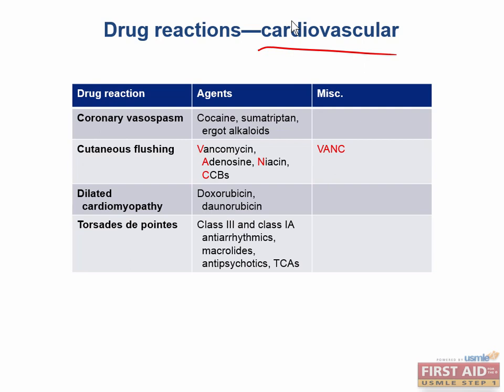We're going to start off with the cardiovascular drugs and their important side reactions. Drugs that cause coronary vasospasm include cocaine, sumatriptan, and ergot alkaloids. Remember that cocaine users may present to an ER with angina, because a side effect of cocaine is to cause coronary vasospasm, thus decreasing the blood supply to the heart. This can cause chest pain, so make sure you tell cocaine users to stop.